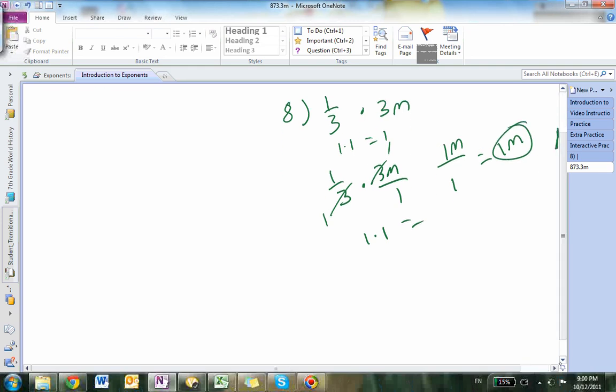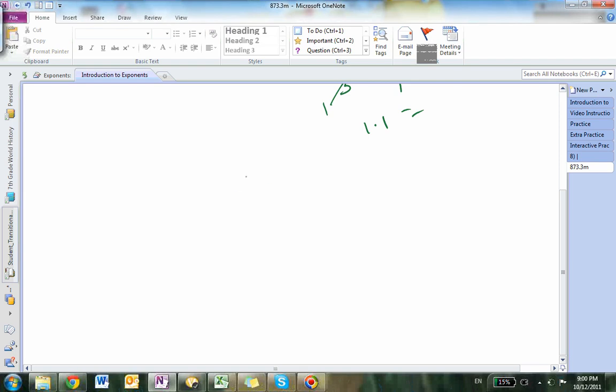Next problem I'm going over is number 9. The problem is negative 5 times a over 10. I rewrote this problem to be negative 5/1 times a/10, again to make it into a fraction so I can complete the problem.